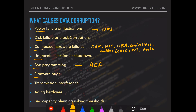Firmware bug: again difficult to identify. Firmware exists on the machine, on individual hard disk drives, on the NAS, on the SAN, switches, etc. Most smart devices will have firmware, and there could be a code or programming issue in the firmware which results in data corruption. Transmission interference is more related to network — there could be magnetic interference that can result in data corruption.